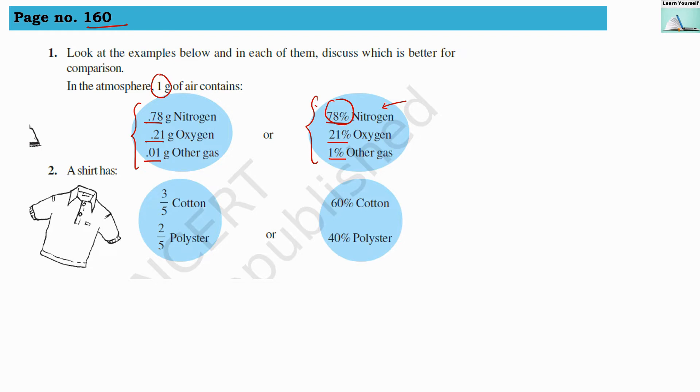So the second: a shirt has 3/5 cotton and 2/5 polyester. So here fraction form is there. Here we have seen decimal form, here fraction form is there. And in comparison of fraction form we have again the percentage comparison that 60% cotton is there and 40% polyester is there. That means cotton share is more.